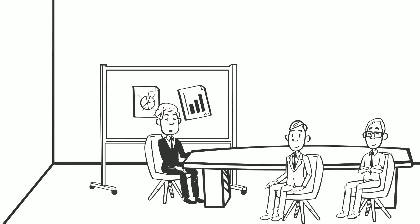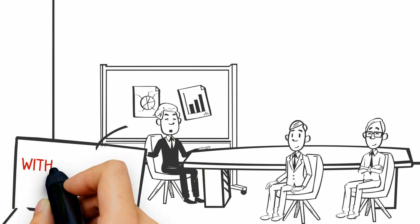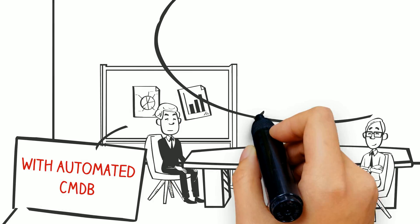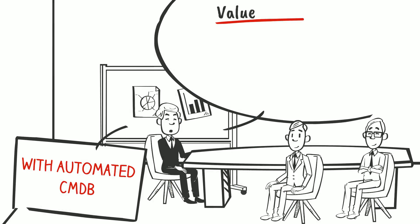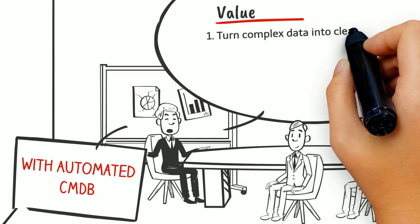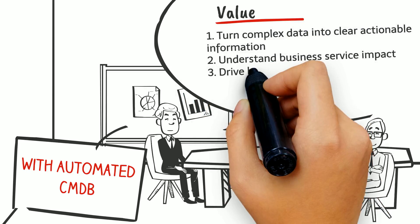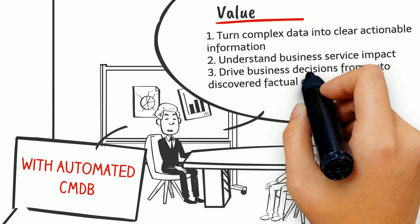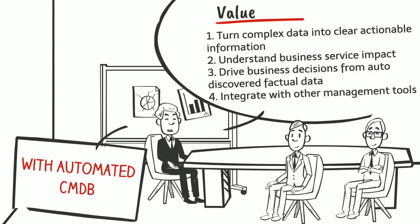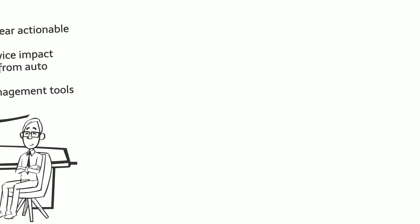With the help of an automated CMDB, your IT infrastructure configuration changes into reliable, actionable information that can be used by all departments. From a business service perspective, your organization has a full and accurate picture of dependencies between applications, yielding a better understanding of the business service impact. Through auto-discovery, you always have an accurate picture of your environment, which helps you drive better business decisions. By integrating your automated CMDB with other management tools, all groups and departments become synchronized with the same version of infrastructure data.